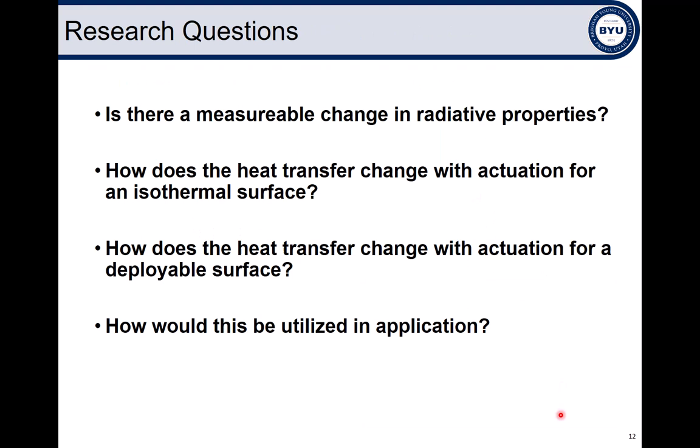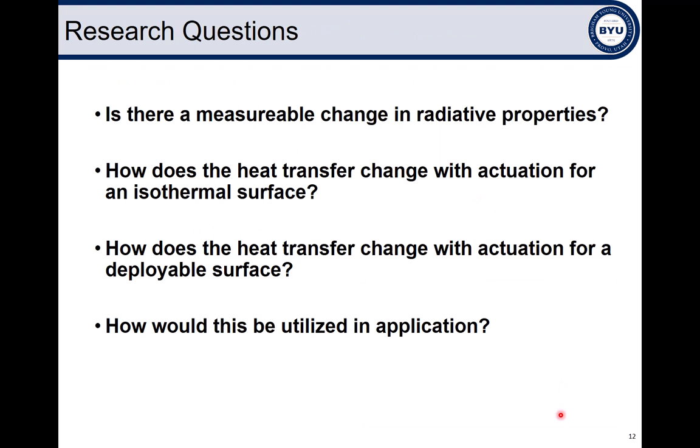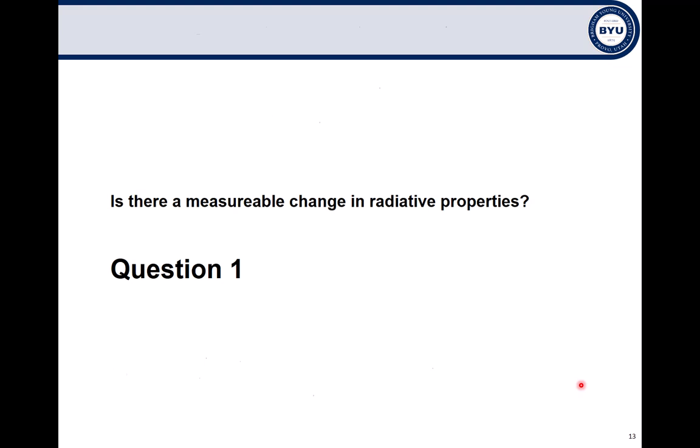My graduate work has been devoted to developing the field of active heat transfer control through manipulation of surface geometry. Ultimately, the work I've completed over the last four and a half years has helped to answer each of the questions I've listed here, progressing from validation of the actual phenomenon down to describing how this technology might be used in real application. I'll now present my work related to each of these questions and demonstrate how my work has helped advance the field of thermal control through geometry manipulation. So first, is there a measurable change in radiative properties?